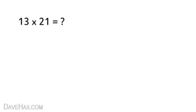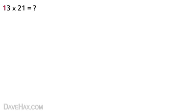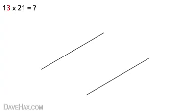As we can see, the first digit in this equation is 1, which means we draw one straight line diagonally like this. The next digit is 3, so we leave a little space then draw three lines parallel to the first one like this.